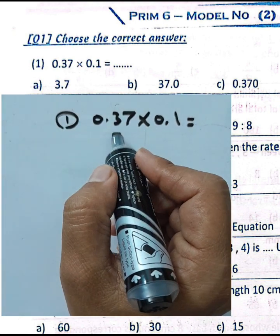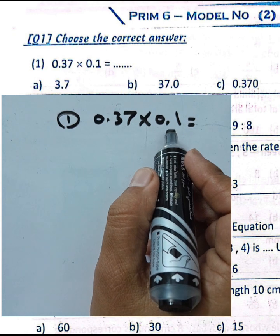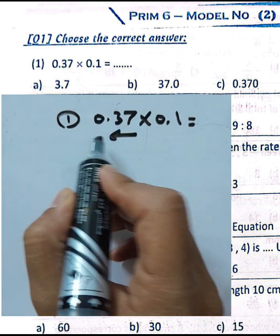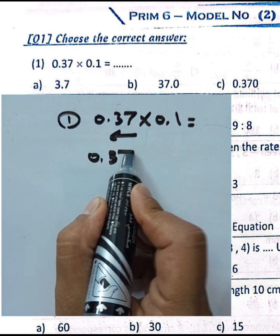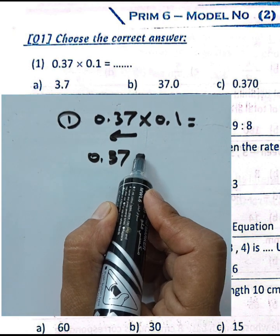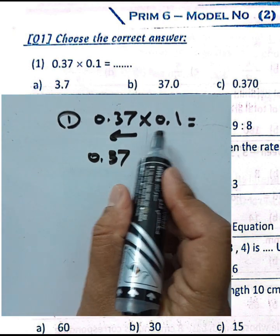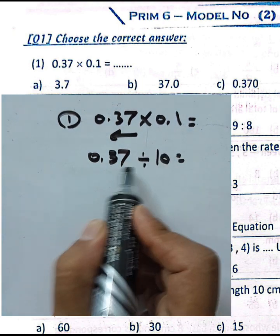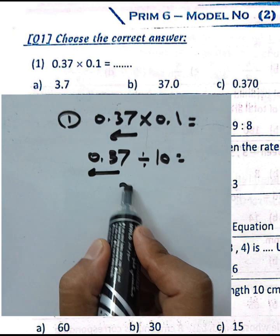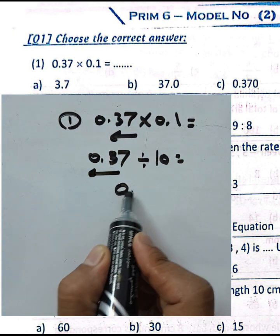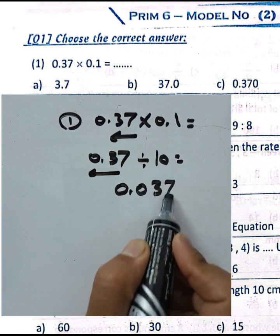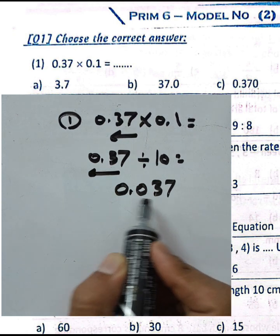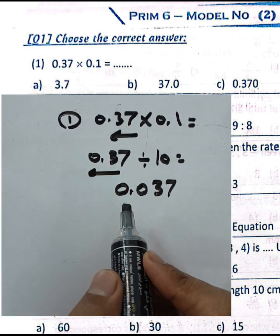We must move the decimal point to the left by one place, because multiplying by one-tenth means dividing by ten. So we write 0.037, and the result will be thirty-seven thousandths.